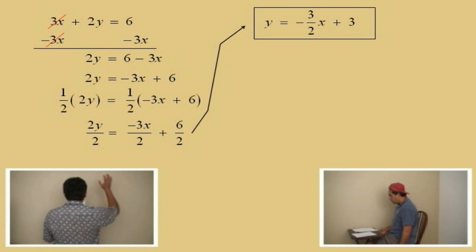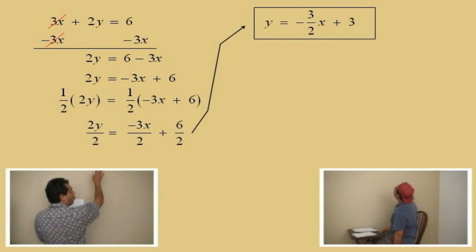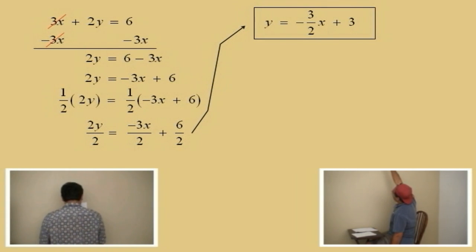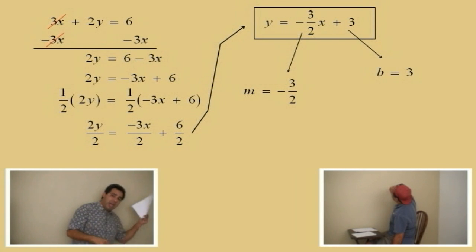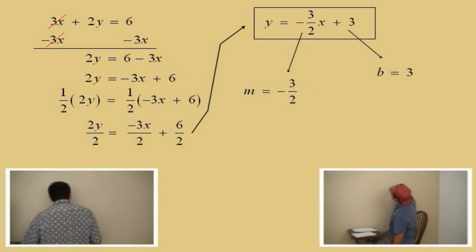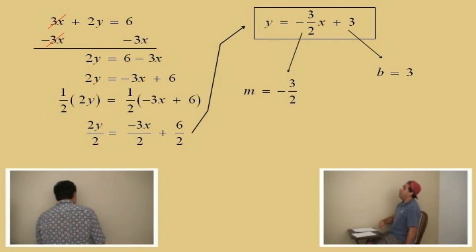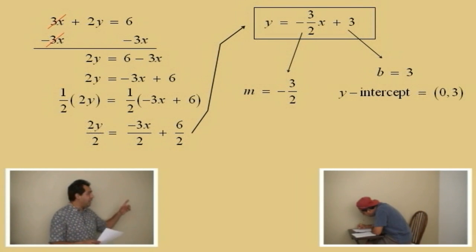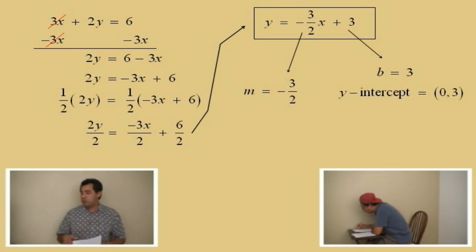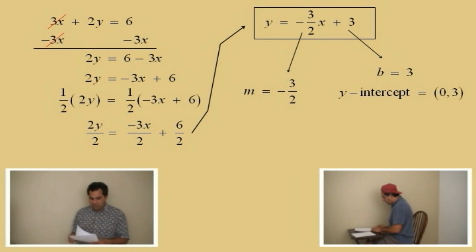We like this form because it's y equals mx plus b form. Charlie, what's the slope? Negative 3 halves. What's the b value? 3. The b value is 3, so that means the coordinates of the y-intercept are what, Charlie? Zero comma 3. Remember, any point that lies on the y-axis has the x-coordinate 0, so zero comma 3 is the y-intercept. Very nice. Let's do another one.